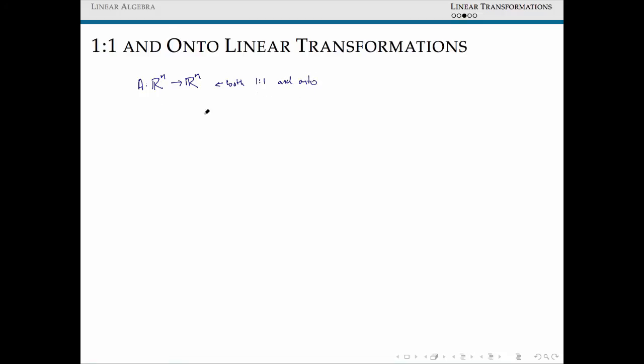As a reminder, although we've seen this in one other video, we say that a map F is one-to-one if for all x, y inside our domain, if the image f(x) equals the image f(y), then x equals y.